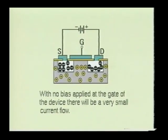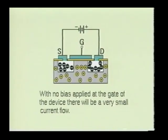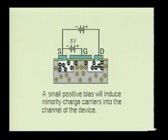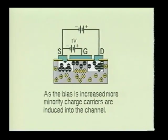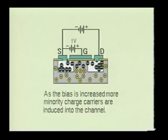If the drain is made positive with respect to the source and no bias is applied to the gate, there will be very little current flowing between these two points, due to the fact that the MOSFET will be in a forward and reverse bias condition. Therefore, the only current flow will be from minority charge carriers. When the gate terminal is made positive with respect to the source terminal, negative charge carriers will be induced into the channel between the drain and source, forming a channel across the surface of the insulated material beneath the gate plate.